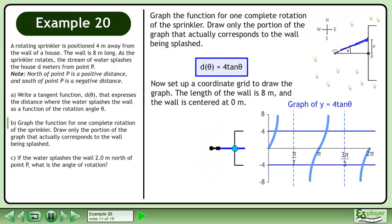Rotate the sprinkler and draw the graph of y equals 4 tan theta. Now erase the portions of the graph that shouldn't be there.